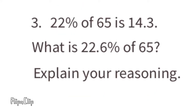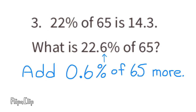Problem number three: 22 percent of 65 is 14.3. What is 22.6 percent of 65? The only difference is the 0.6 percent added to the 22 percent. Since 22 percent of 65 is 14.3, we need to add 0.6 percent of 65 to 14.3.